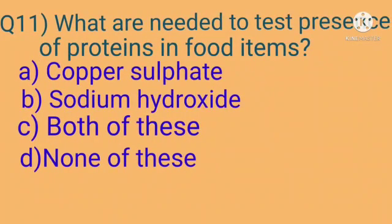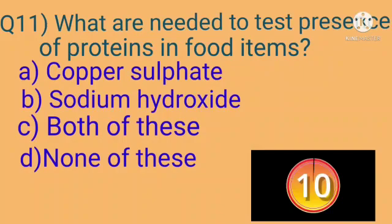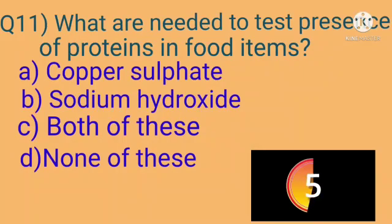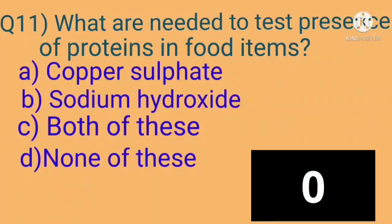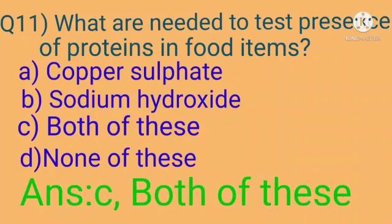Question 11: What is needed to test the presence of proteins in food items? A. Copper sulfate, B. Sodium hydroxide, C. Both of these, D. None of these. You have to answer in 10 seconds. Answer is C — Both copper sulfate and sodium hydroxide are needed to test the presence of proteins in food items.